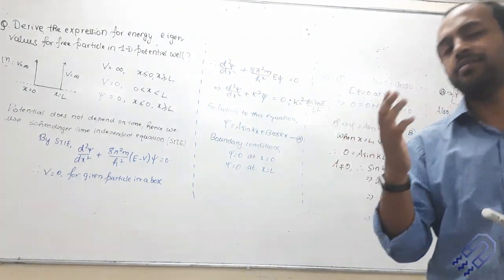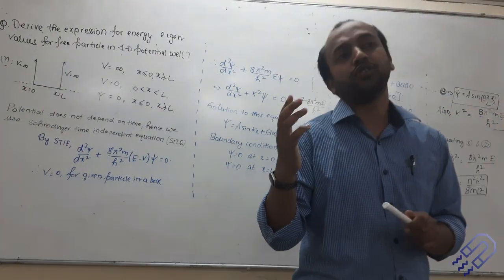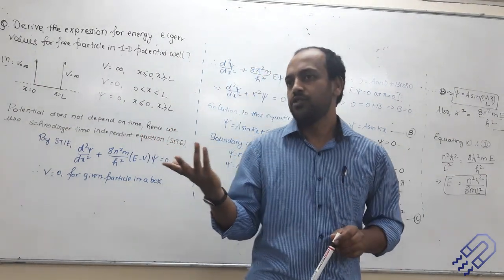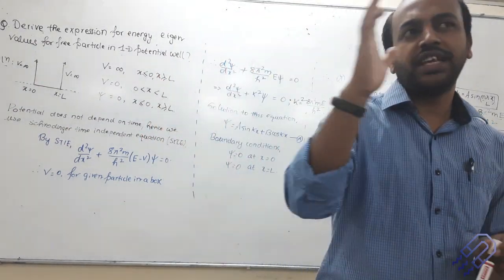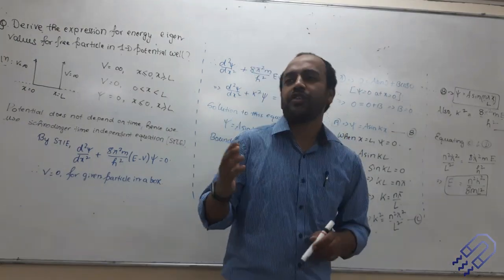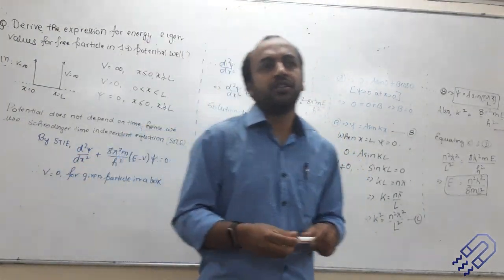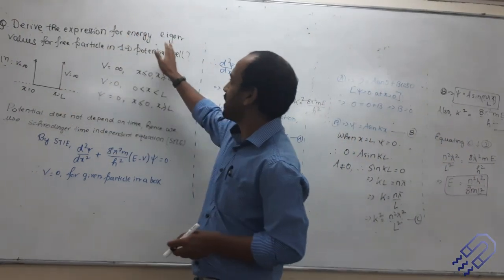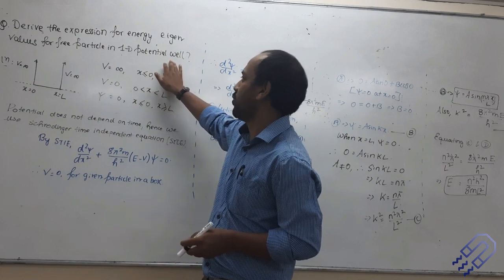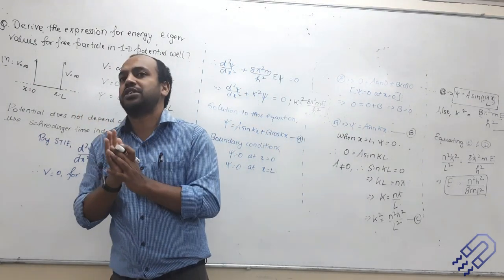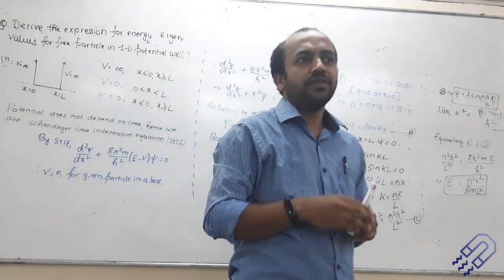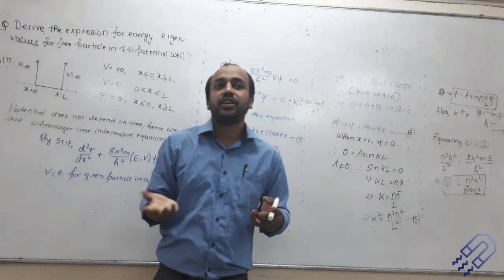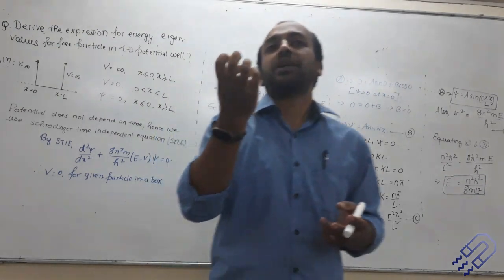What is the dimension of an atom? It is 10 to the power minus 10 meters — so you can imagine how small it is; we cannot see it with the naked eye. What is the dimension of the nucleus? 10 to the power minus 15 meters. So we have a very small dimension of confinement — a one-dimensional potential well. And the behavior we observe is not something we see in day-to-day life; the behavior is quantum mechanical.